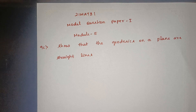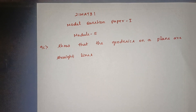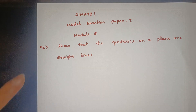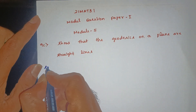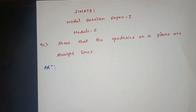Next question: MAT 3 Model question 1. Model 5 — Show that the geodesics in a plane are straight lines. This is the same as: Prove that the shortest distance between two points in a plane is the straight line.